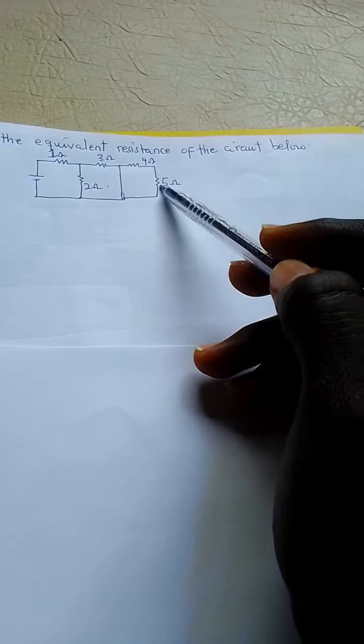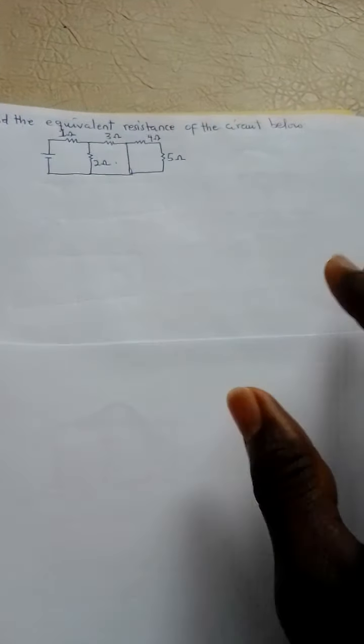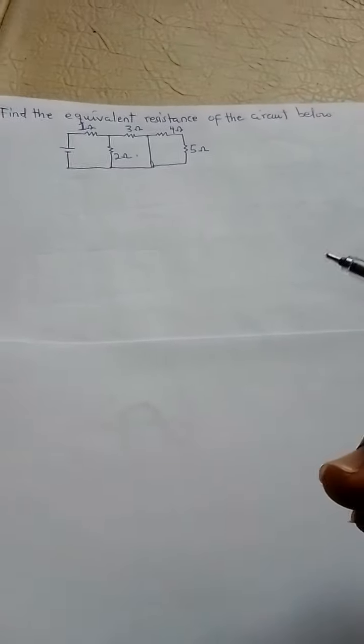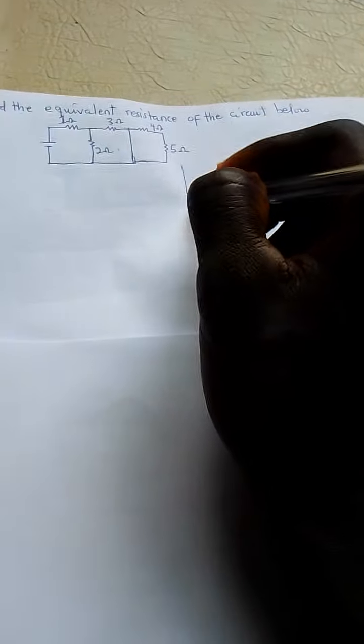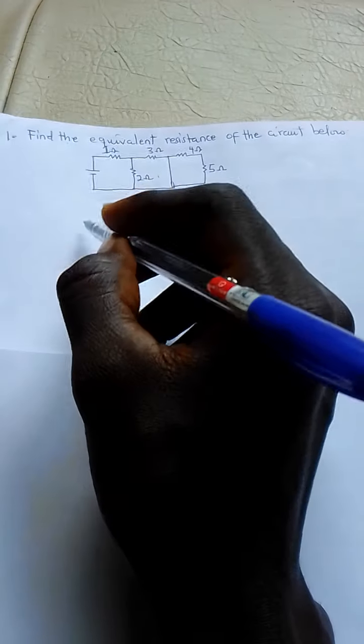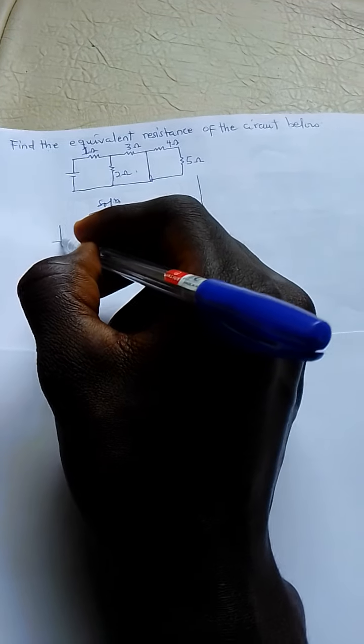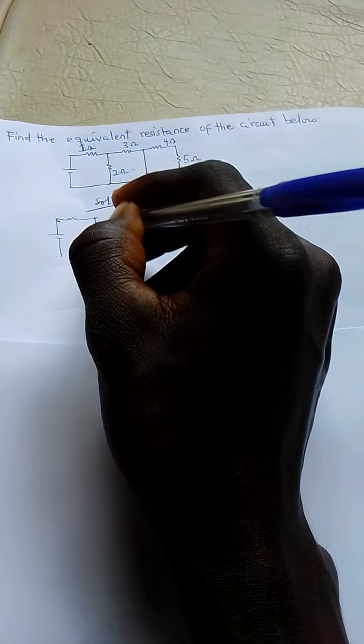So it will rather take this part and flow back to the source rather than passing here. So we can see the 4 ohm and 5 ohm are said to be short circuited. So let's draw the active part of the circuit. When I say active parts, the part of the circuit working.